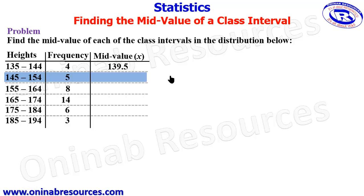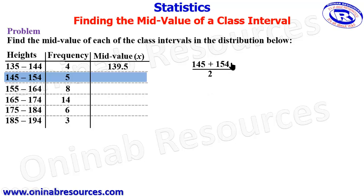For the second class interval, we have 145 to 154. We add 145 to 154 and divide the sum by 2. 145 plus 154 gives 299, and dividing by 2 we have 149.5, representing the mid value of the second class interval.